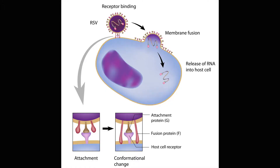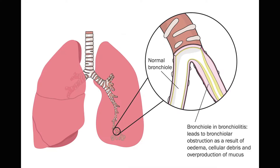Here's what's happening with those cells. The RSV virus is attaching to the cell membrane, causing changes to occur on the cell, which then allows the cells to start bunching together and causing that abnormal function in those small airways.